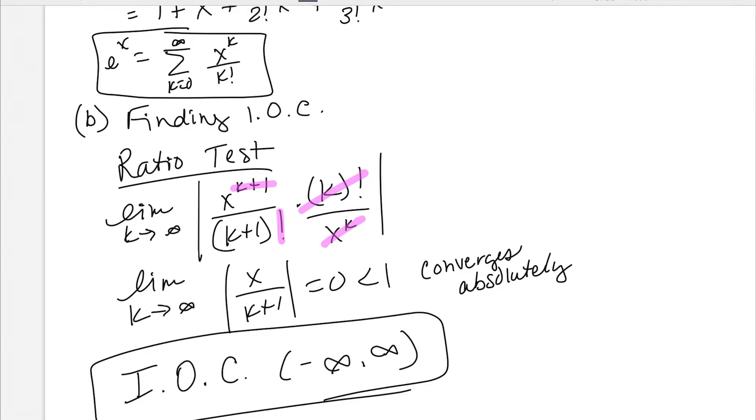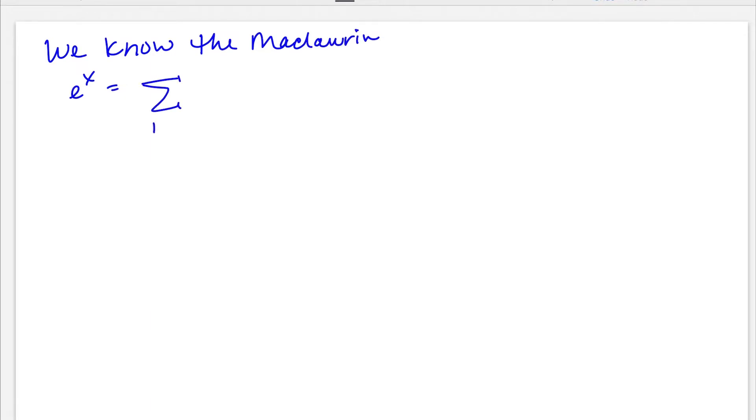Here is my Maclaurin series for e to the x, and the interval of convergence is infinite. Now that we know that, let's change our color. I'm going to write it up here again. We know that e to the x, the Maclaurin, going from zero to infinity of x to the k over k factorial, and my interval of convergence is infinite. This is equivalent to the polynomial 1 plus x plus x squared over 2 factorial, x cubed over 3 factorial, et cetera. We've got that down.